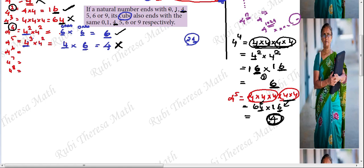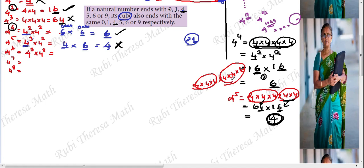Check 4 power 6: split as 4 power 3 into 4 power 3. 4 cube is 64. 64 times 64: ones place is 4 times 4 equals 16, ones place is 6. So 4 power 6 ends with 6. When the number ending with 4 is cubed, its answer also ends with 4.